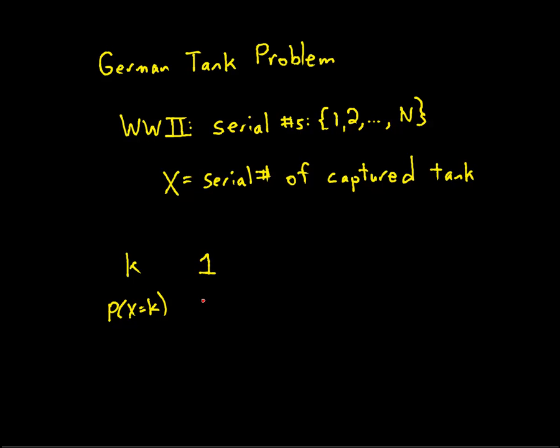And the serial number will be 1 with probability 1 over N. The serial number will be 2 with probability 1 over N, 3 with probability 1 over N, etc., all the way up to N with probability 1 over N. That's assuming that the tank was captured very recently, so that all these tanks were made and are put into production.